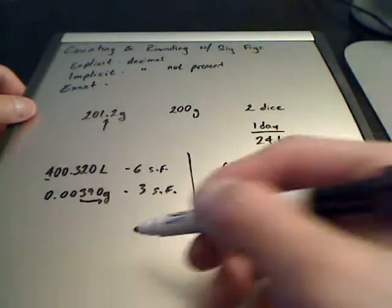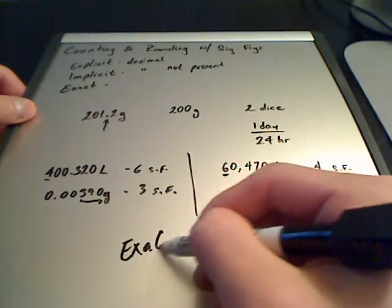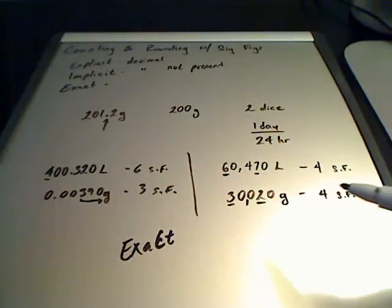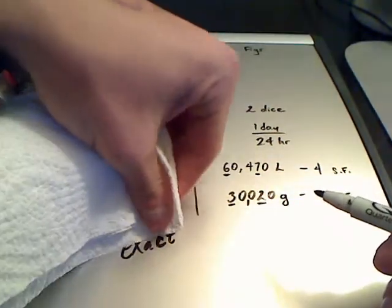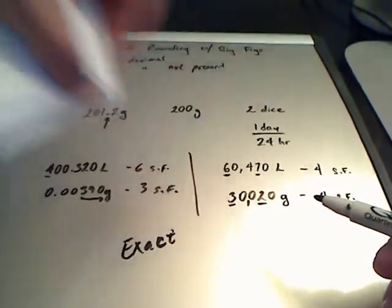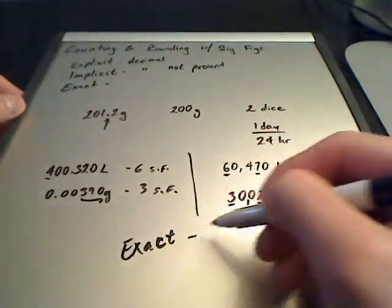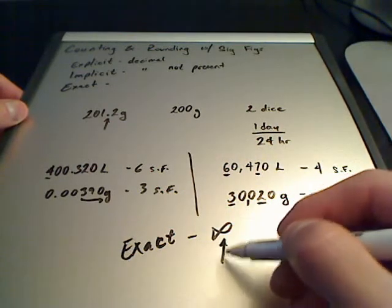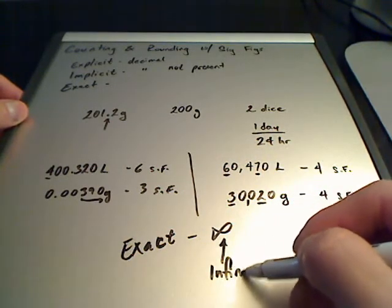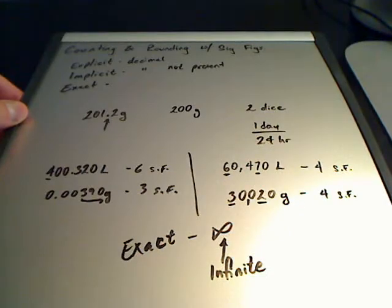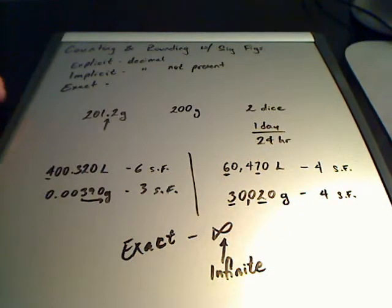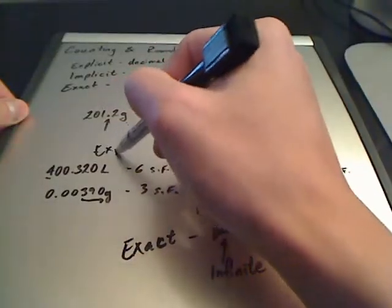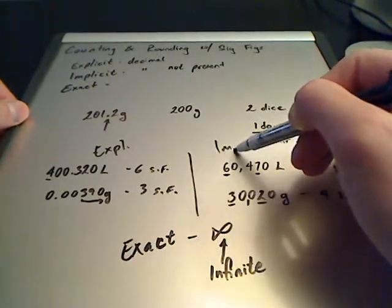All exacts are going to be infinite — that's the symbol for infinite. So make sure you remember that. You have your explicit and your implicit rules.